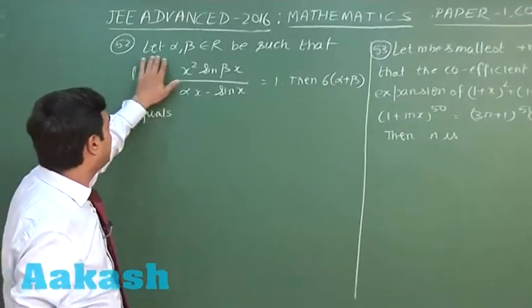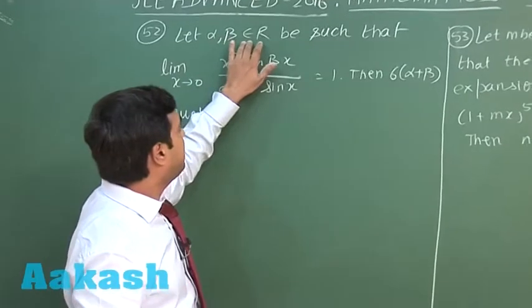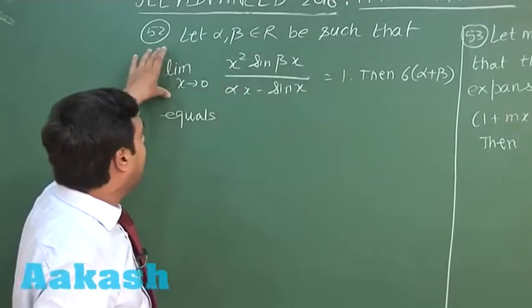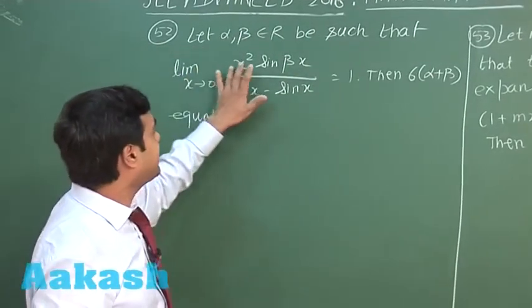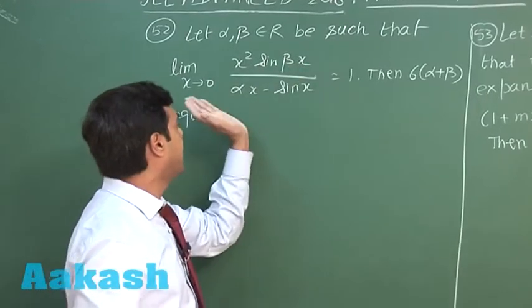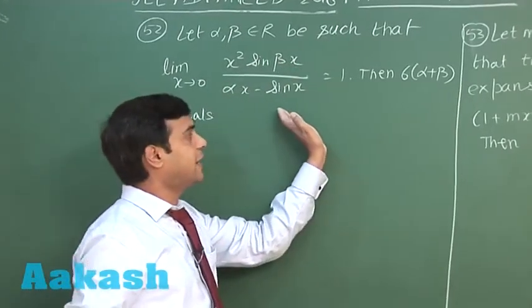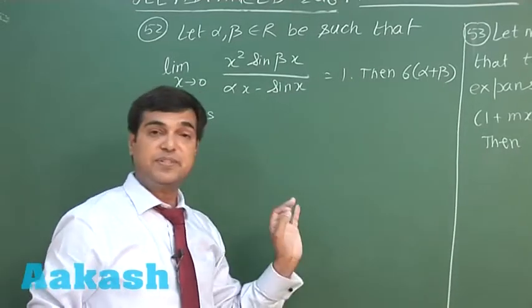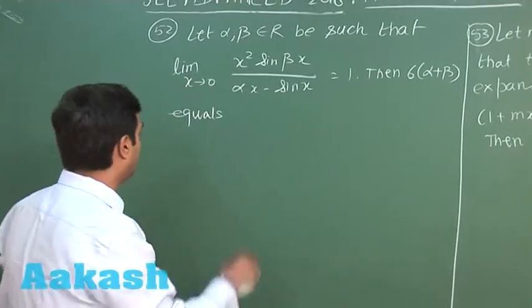Let us take question number 52. Let alpha, beta be real numbers such that limit x approaching 0 of x square sin beta x upon alpha x minus sin x is equal to 1, then 6 times alpha plus beta is equal to.